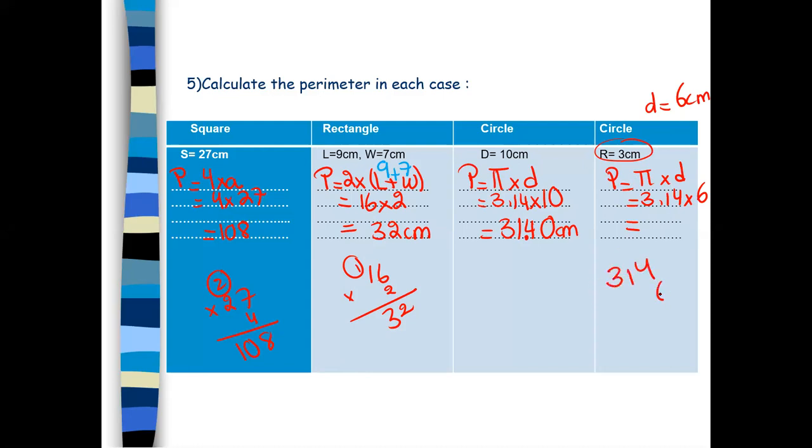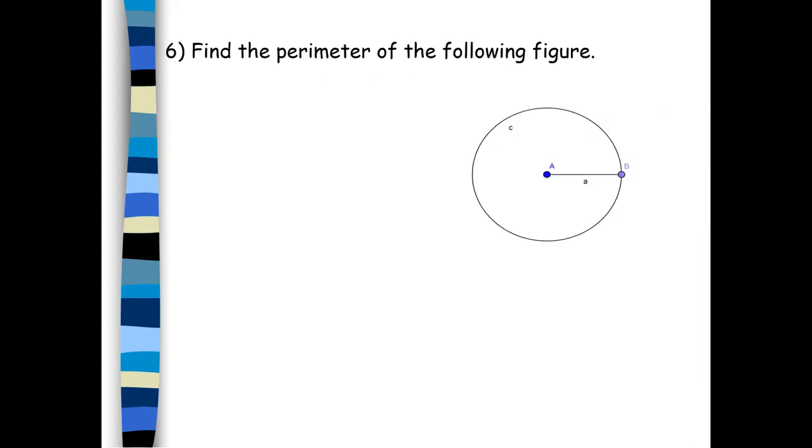Let's arrange times 6. 6 times 4, 24. 6 times 1, 6 plus 2, 8. 6 times 3, 18. Then count 2 digits. So 18.84 centimeters. So just you have to concentrate and write the rules and calculate.